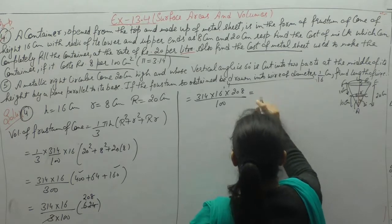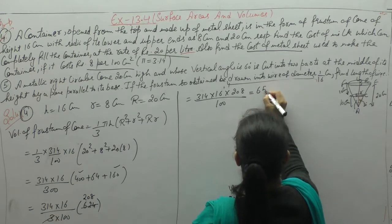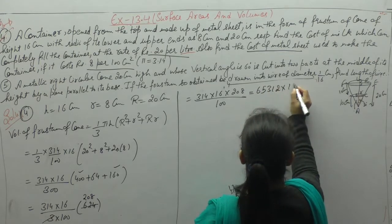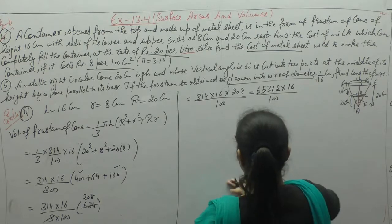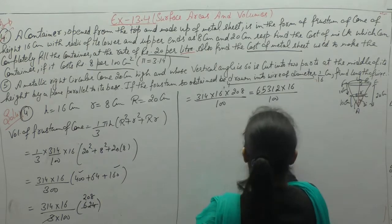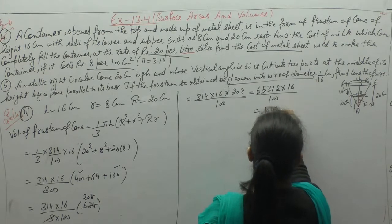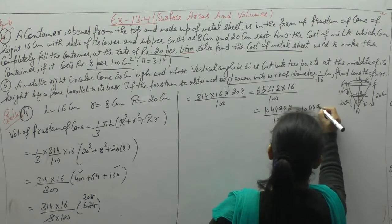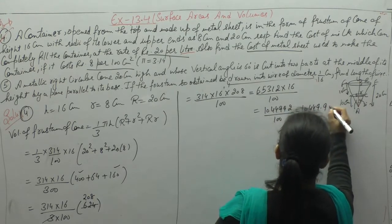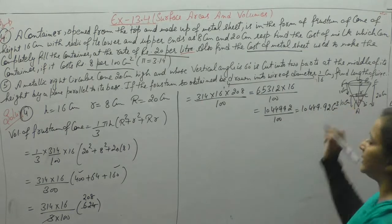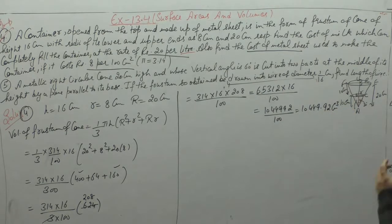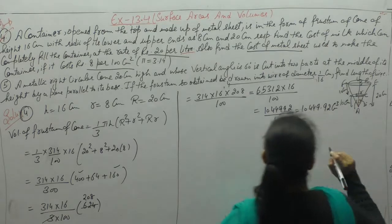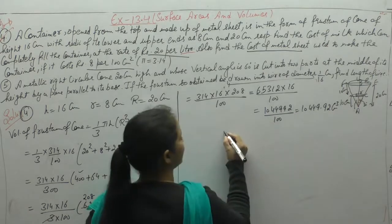Multiplying 3.14 × 16 × 208 upon 100 gives us 10449.92. So the volume is 10449.92 centimeter cube.